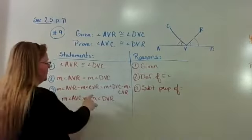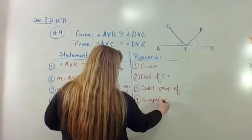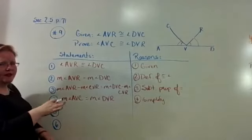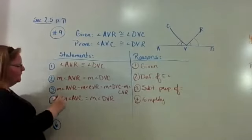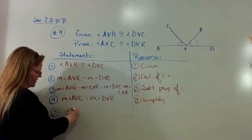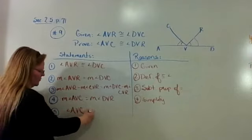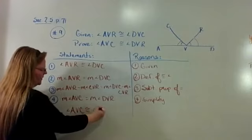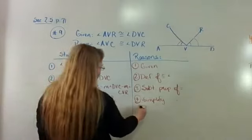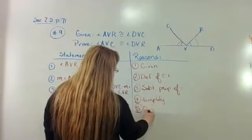When you're talking about moving on, we know that's true because I simplified both sides. It's not a property to simplify, it's just something that happens. And then we know that angle AVC is congruent to angle DVR by the definition of congruency.